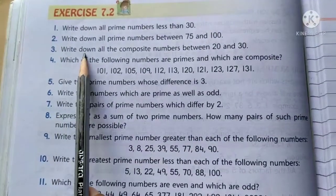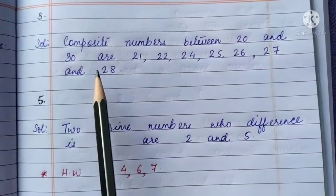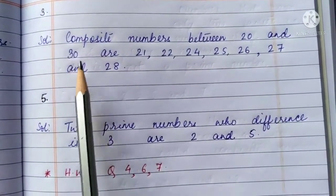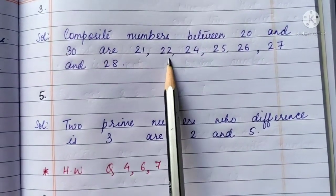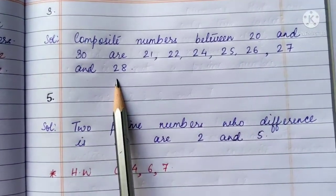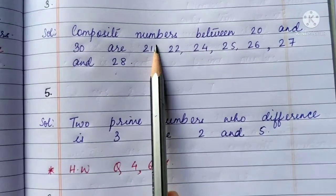Write down all the composite numbers between 20 and 30. Composite numbers between 20 and 30 are 21, 22, 24, 25, 26, 27 and 28. I am sure you remember that composite numbers are numbers which have more than two factors.